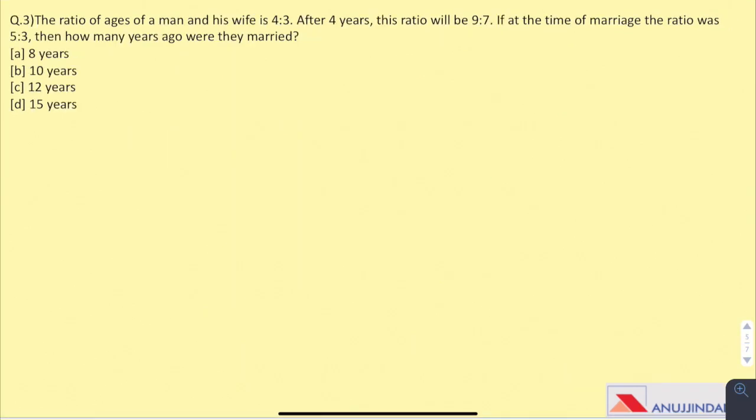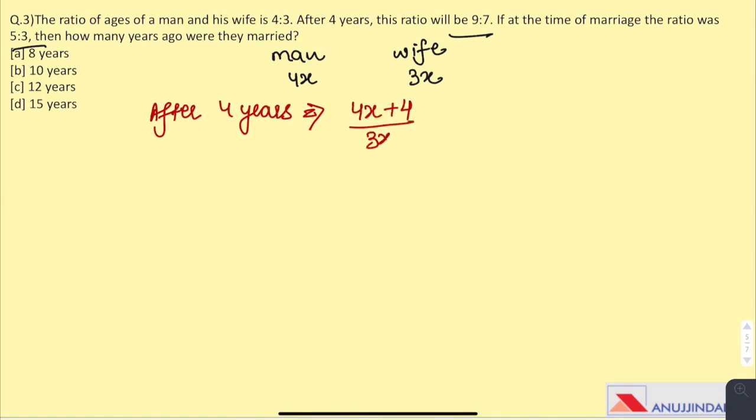Question 3. The ratio of ages of a man and his wife is 4 is to 3. After 4 years, this ratio will be 9 is to 7. If at the time of marriage, the ratio was 5 is to 3, then how many years ago were they married? Suppose their present ages are 4x and 3x respectively. After 4 years, their ratio would be 4x plus 4 to 3x plus 4, which equals 9 is to 7. This is our equation 1.